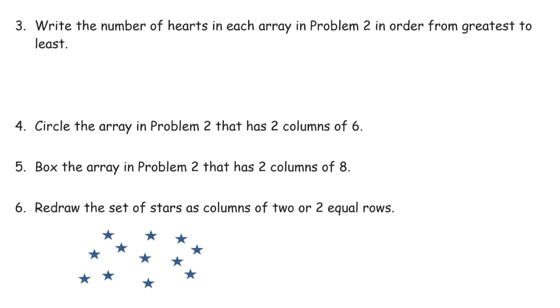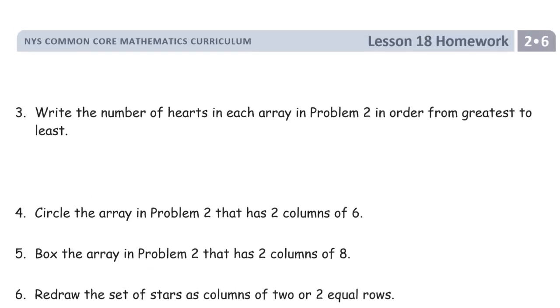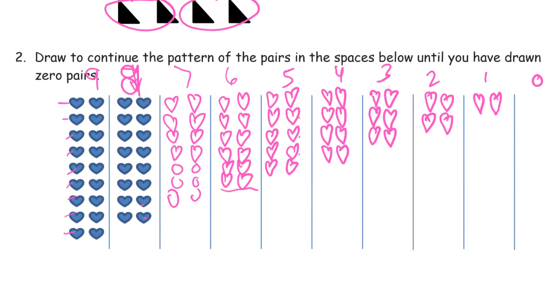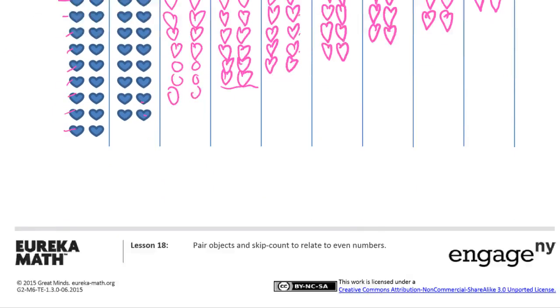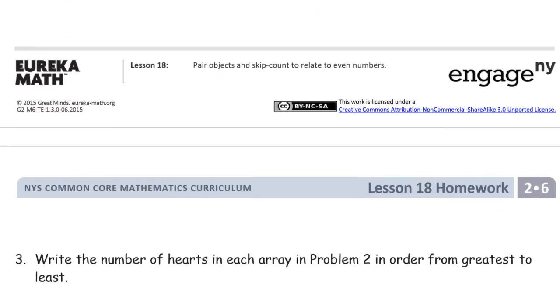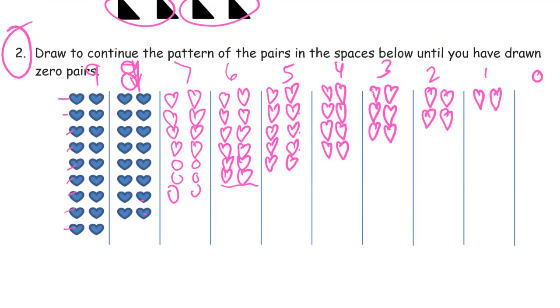Write the number of hearts in each array in problem two in order from greatest to least. So that's going back to problem two, which is this one here, drawing all the hearts. And write the number of hearts in each array from greatest to least. So the greatest number is here. This is two, four, six, eight, ten, twelve, fourteen, sixteen, eighteen. So we start with eighteen.